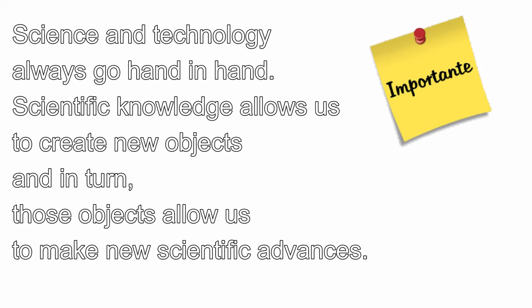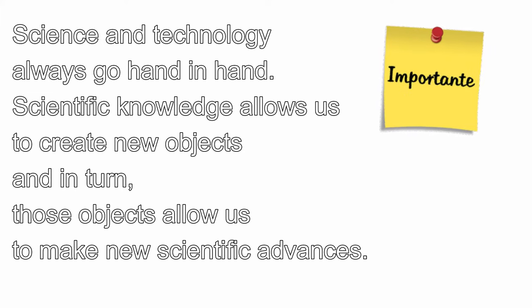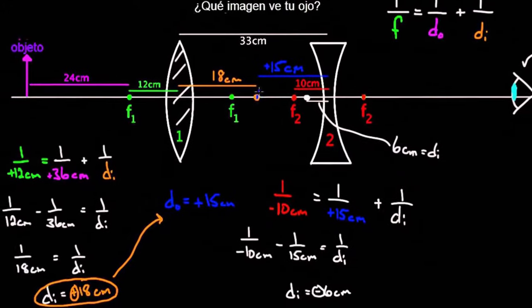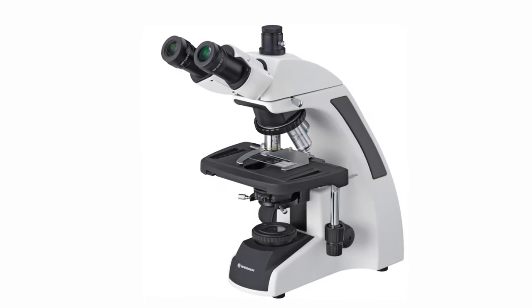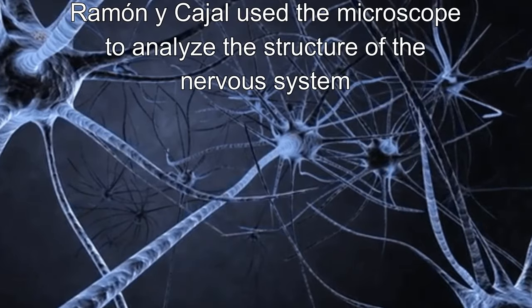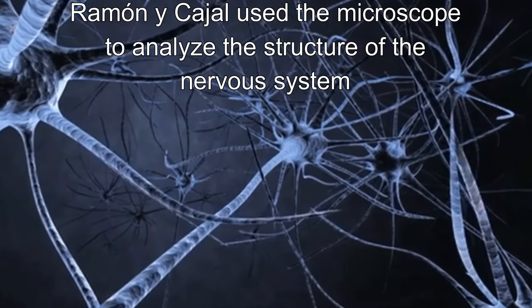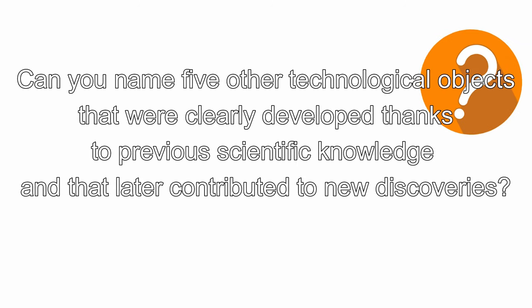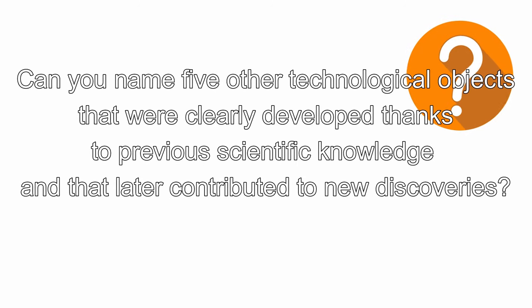Science and technology always go hand-in-hand. Scientific knowledge allows us to create new objects. For example, the study of optics allowed us to create better microscopes. And in turn, microscopes allowed us to make new scientific advances. Can you name five other technological objects that were clearly developed thanks to previous scientific knowledge and that later contributed to new discoveries?